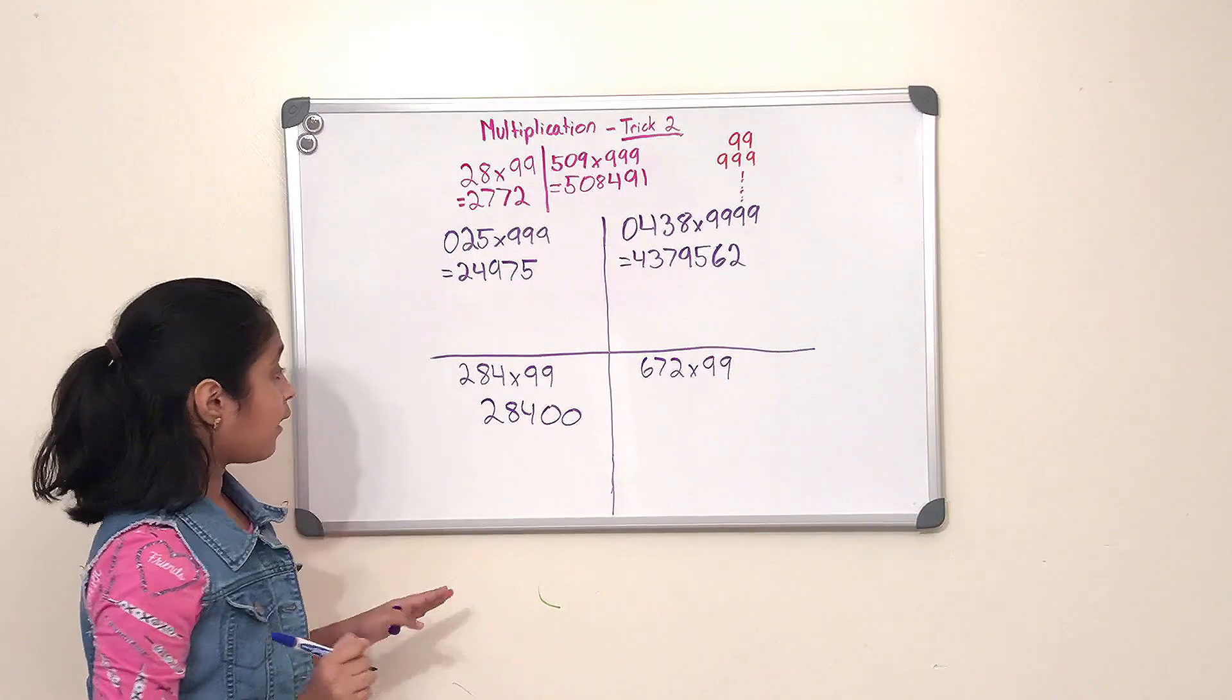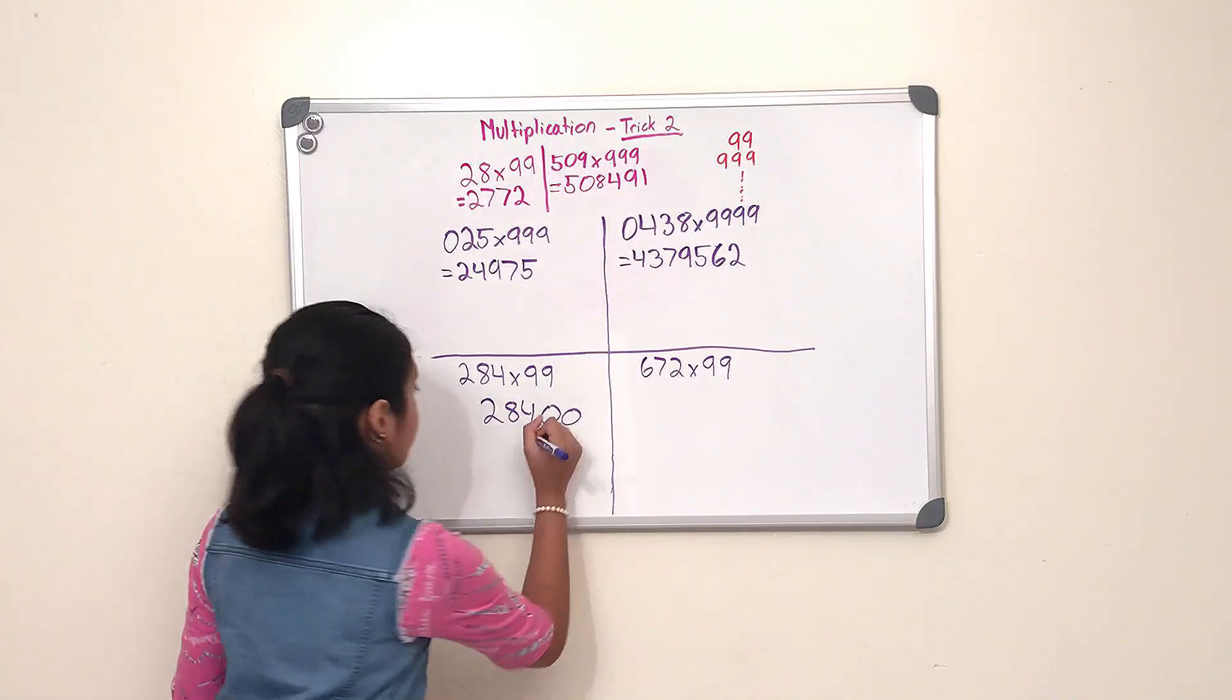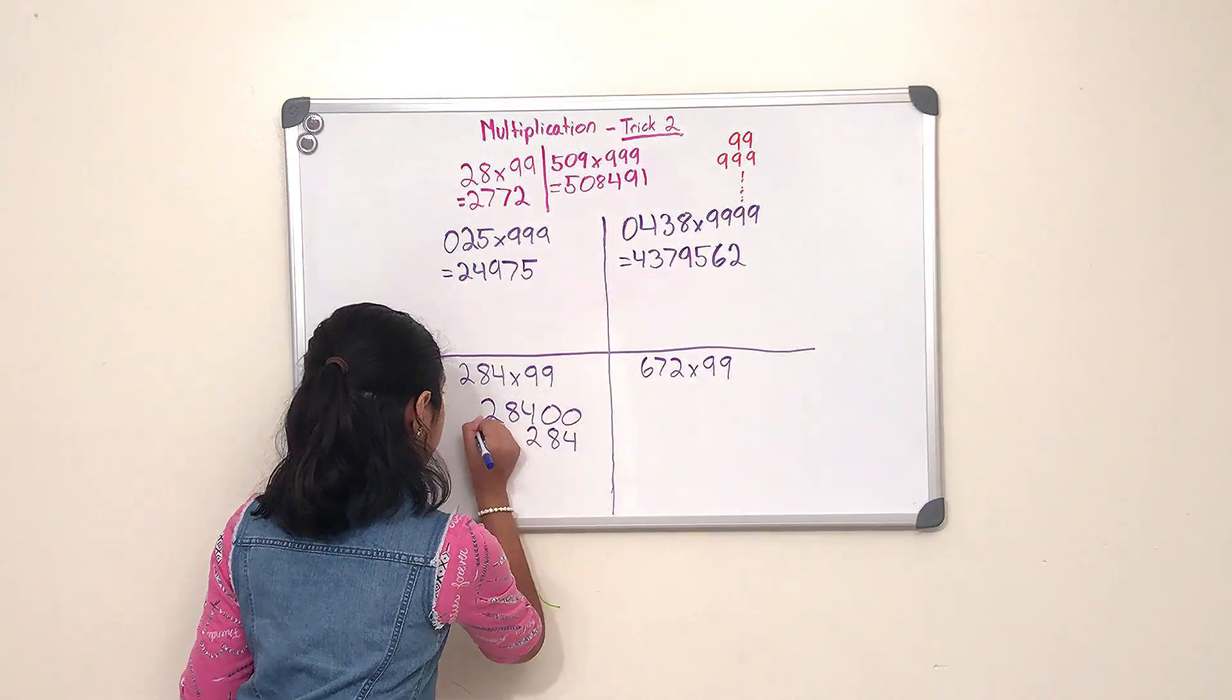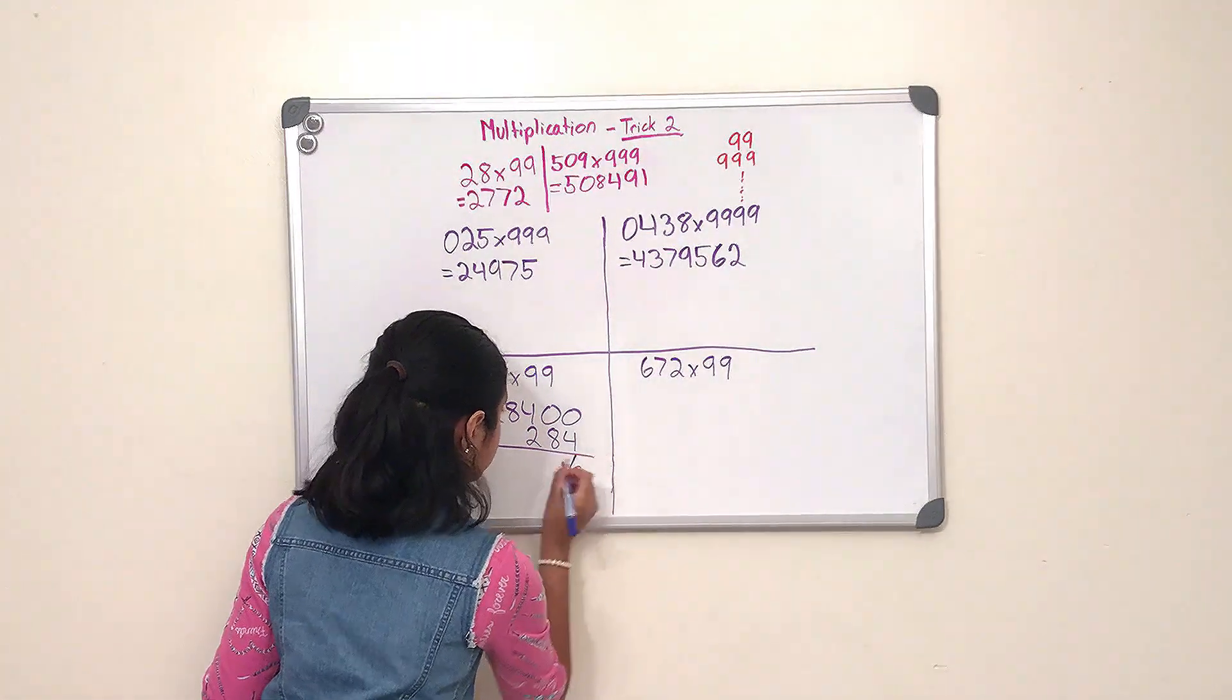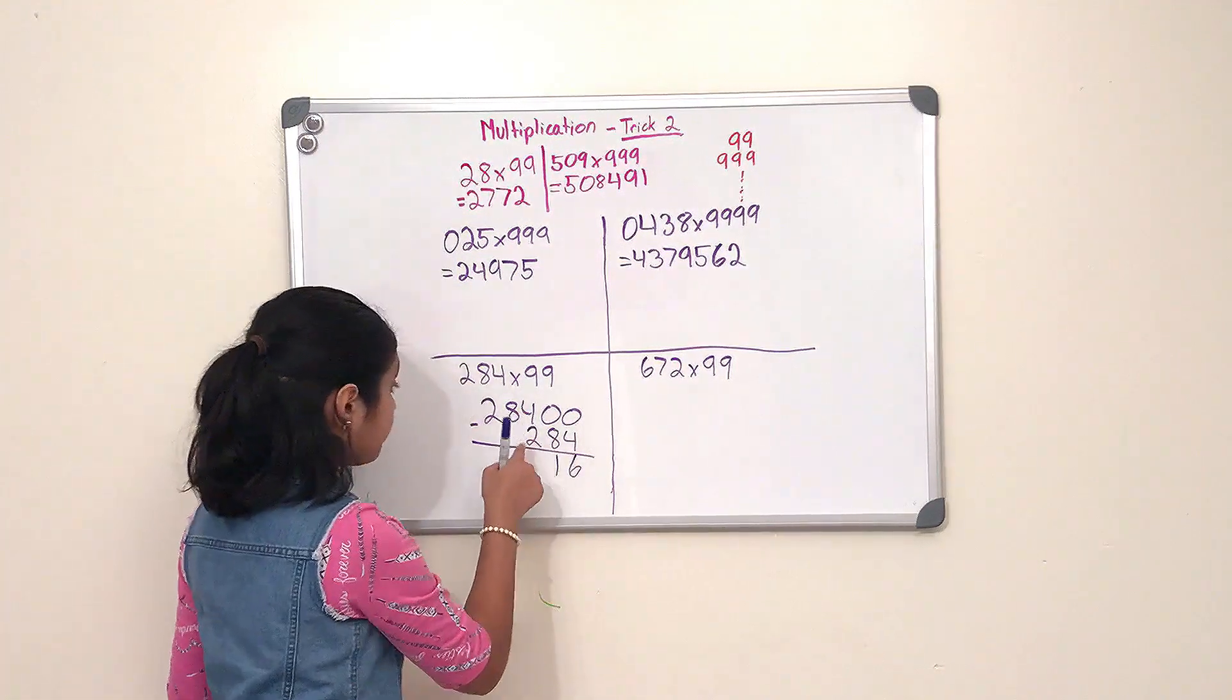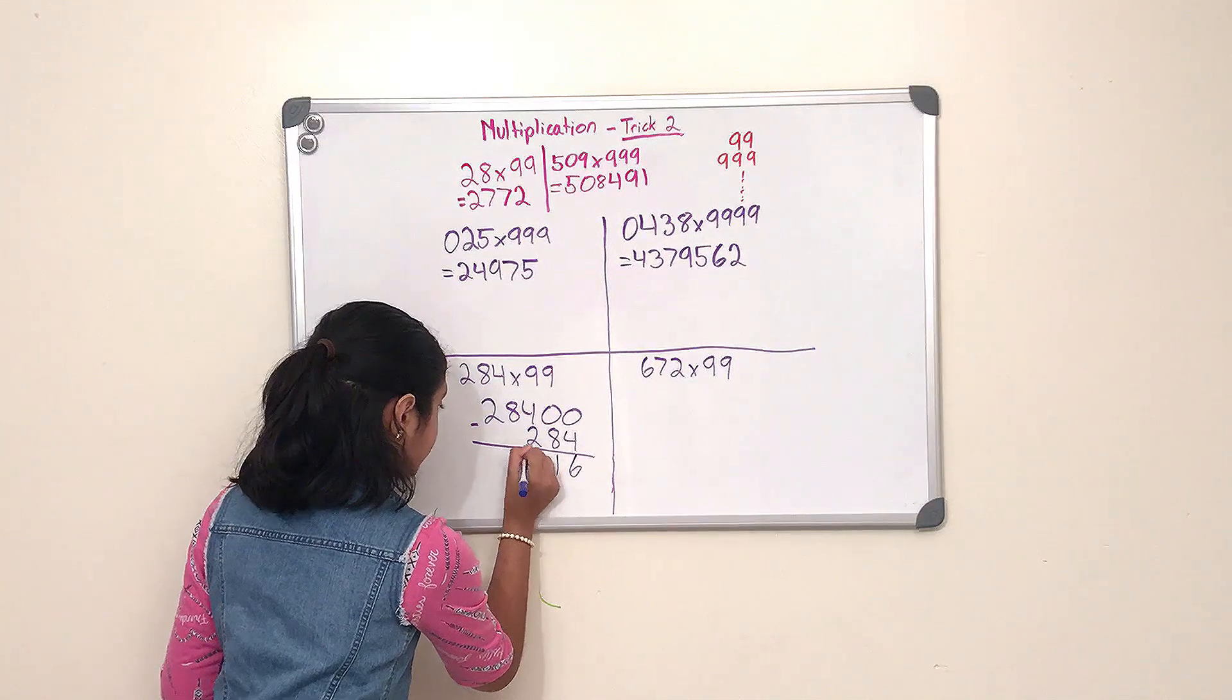So, and add the two zeros, now we have to subtract 284 from this number. So I'm going to write it just below, and now let's get into the subtracting. So let's do 10 minus 4, and that's 6, and 9 minus 8, and that's 1, 3 minus 2, which is 1, 8 remains the same, and 2 remains the same. And this is our product: 28,116.